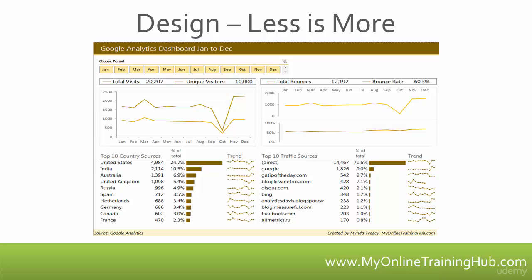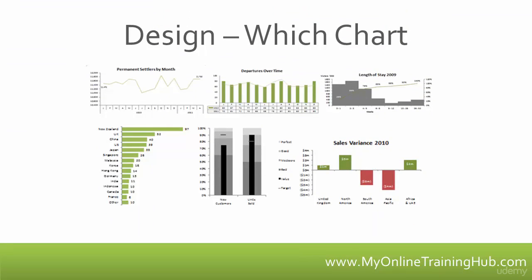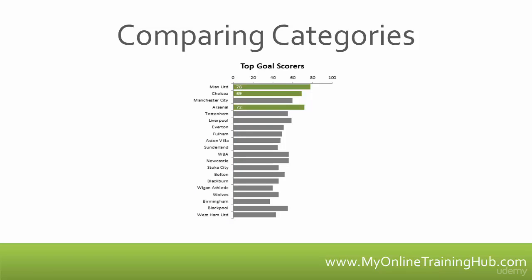For example, if you have two charts displaying the same metric but in a different context, then you might colour them the same to show the reader that they are related — just like I've done in this dashboard with the bar charts at the bottom. Both use the same colour because they both display visitor numbers, just grouped differently. Bar charts are ideal for comparing values across categories, since the long category names are easier to read when the axis is vertical. The bars allow you to easily compare values.